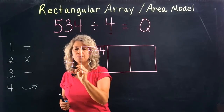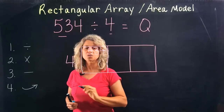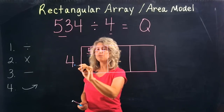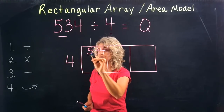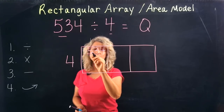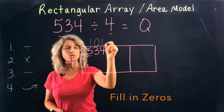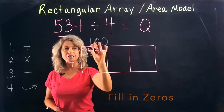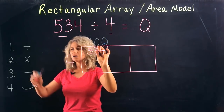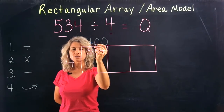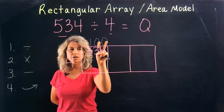Look at the divisor and ask: how many times will 4 fit into this first number? 4 will go into 5 one time. Because the 5 is in the hundreds place, we're going to put two zeros to represent the hundreds place.